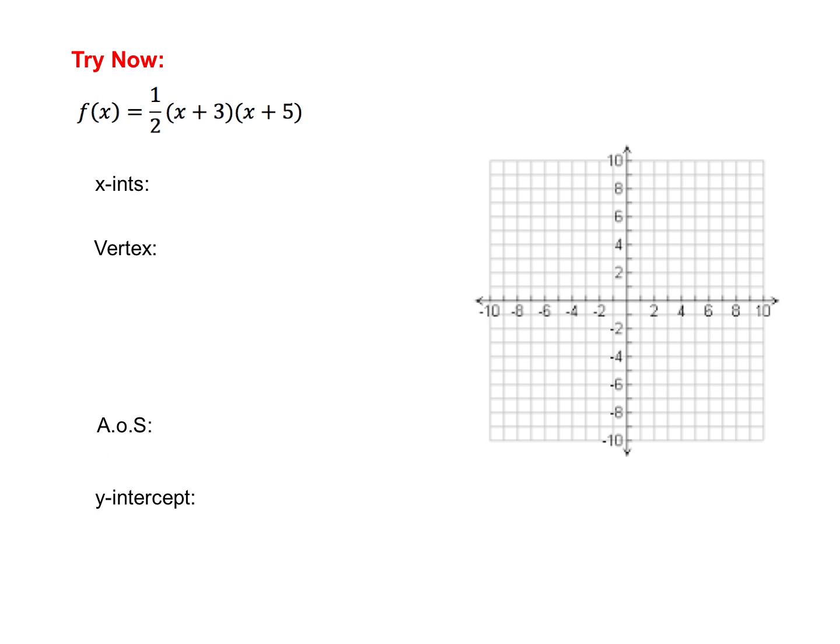Here's a try-now problem for you to try on your own. But before you pause the video, I want to just talk a little bit about the a value here. Notice the a is a half. Now it's positive, so we know it's going to open up. But since a half is between 0 and 1, we know that the graph is going to get wider. If you choose to type this into your graphing calculator and make the table, remember that when we have fractions, you have to put parentheses around them in your graphing calculator. So if you're going to type this into the y equal, you'll do a parenthesis and then a 1 divided by 2 and close your parenthesis, and then do the parenthesis x plus 3, parenthesis x plus 5. Pause the video now and give this problem a try.